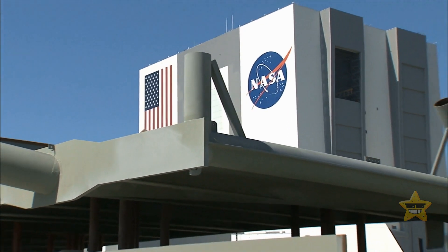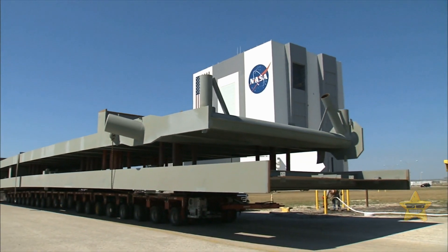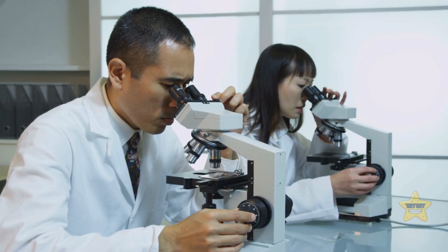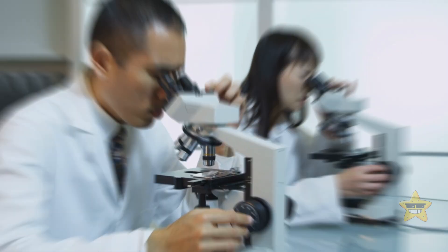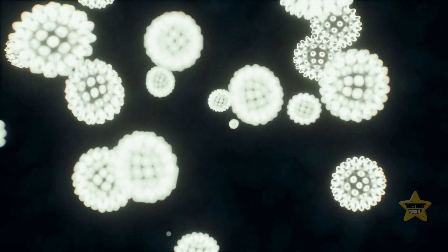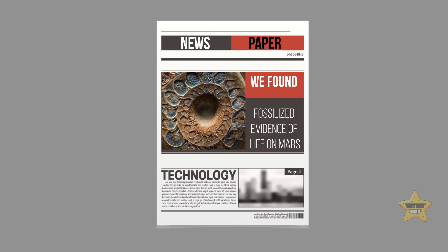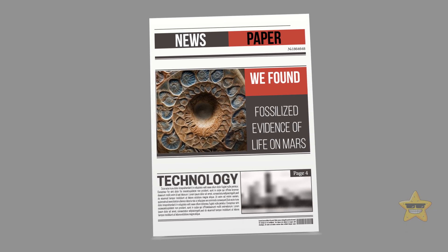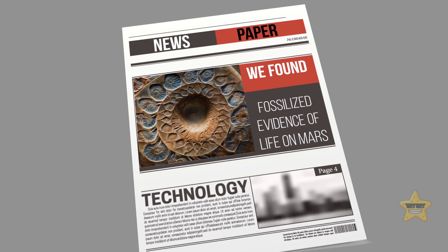Scientists at Johnson Space Center carefully examined this Martian visitor. Years later, physicists made a remarkable announcement. This meteorite contained tiny structures that looked just like living organisms found on Earth. NASA immediately shared this discovery with the world. We found fossilized evidence of life on Mars.